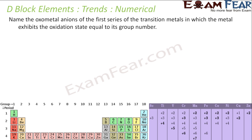Name the oxo metal ions of the first series of transition metals in which the metal exhibits an oxidation state equal to its group number. Scandium exhibits oxidation state +3 and belongs to group 3. Titanium has oxidation state +4 and is in group 4. Vanadium has oxidation state +5 in group 5. Chromium +6 in group 6. Manganese +7 in group 7.